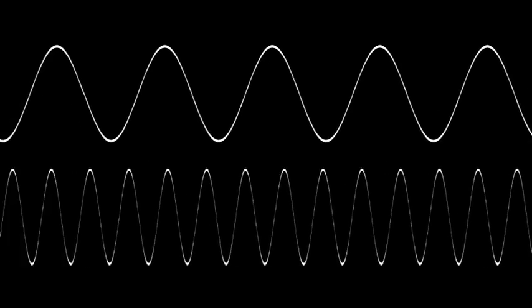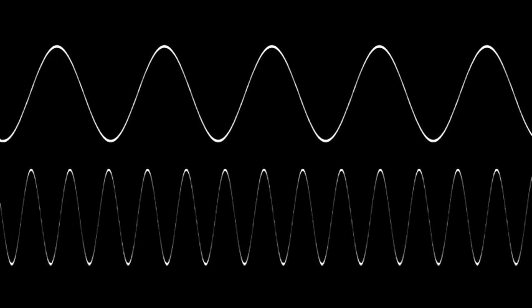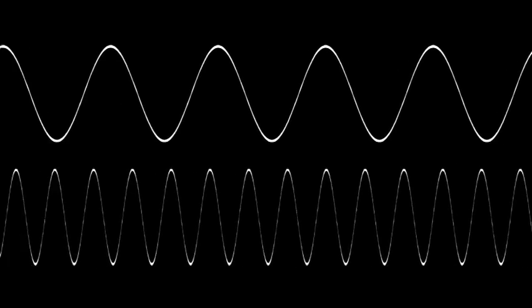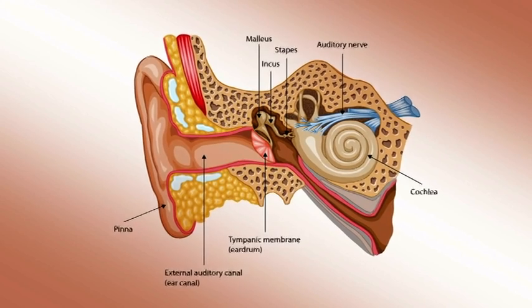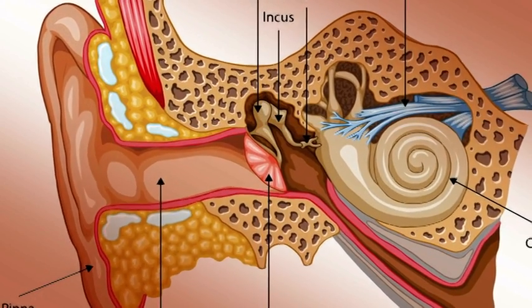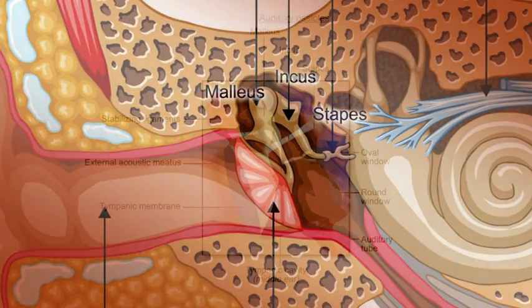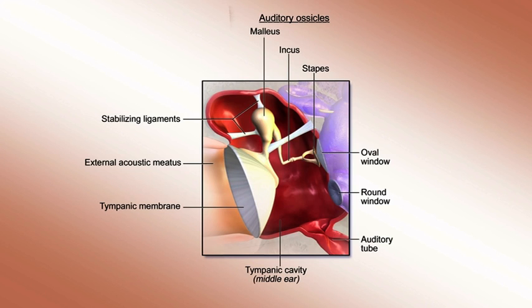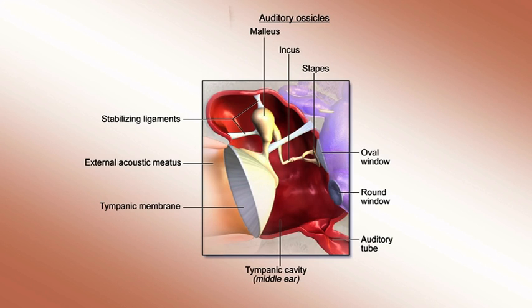High notes have a high frequency and low notes have a low frequency, and different amplitudes — that's the volume. The drum vibrates with a different frequency and amplitude, and that frequency and amplitude is then transferred to these three little bones, the smallest bones in the body, called the malleus, incus, and stapes, which multiply the sound — the frequency and amplitude — by 22 times, to then cause fluctuations on what's called the oval window, which is much much smaller than the tympanic membrane.